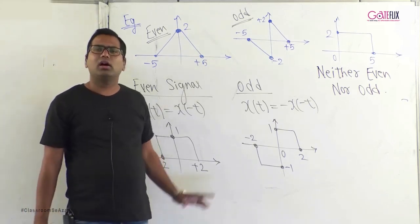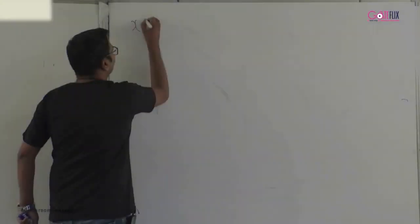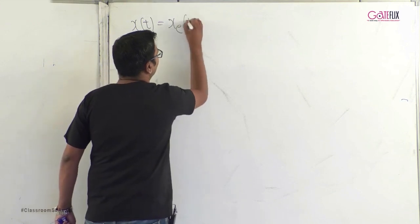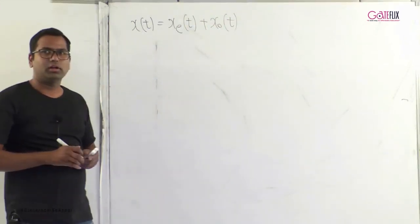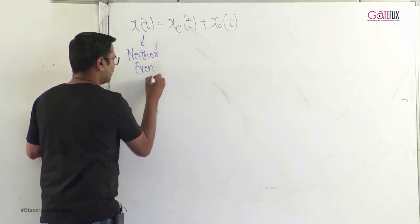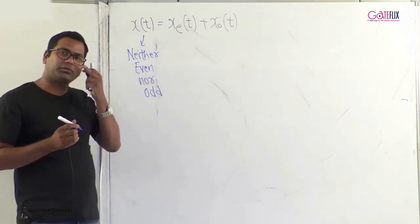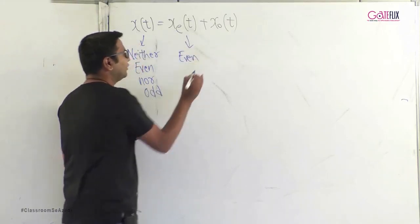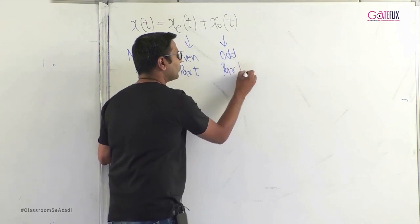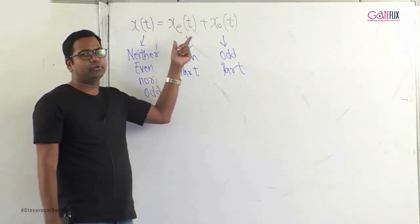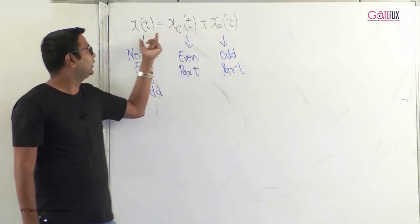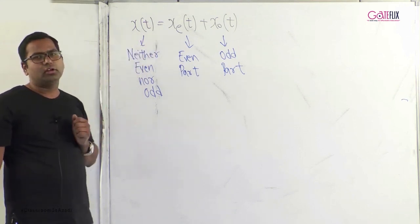Neither-even-nor-odd signals are important. If a signal x(t) is neither even nor odd, it can be broken down into two parts: an even part x_even(t) and an odd part x_odd(t). Adding the even part and odd part gives back the original signal x(t).